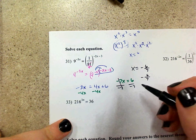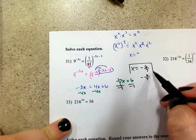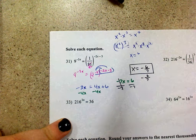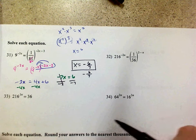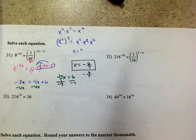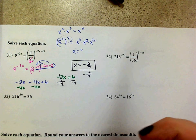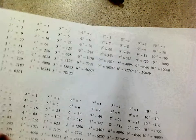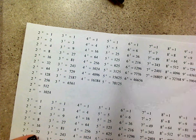This is an exponential equation, and there are no extraneous solutions, so there you go. On problem 32, 216 and 36 are both powers of the same base. Looking at the power chart, 216 and 36 are both powers of 6.